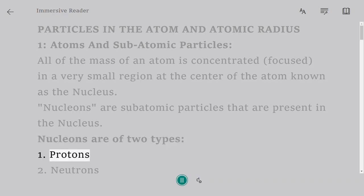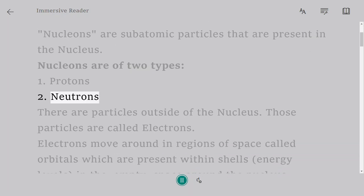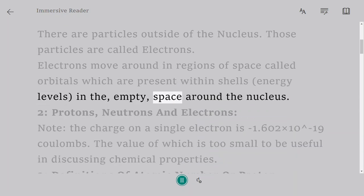1. Protons. 2. Neutrons. There are particles outside of the nucleus. Those particles are called electrons. Electrons move around in regions of space called orbitals which are present within shells, energy levels, in the empty space around the nucleus.